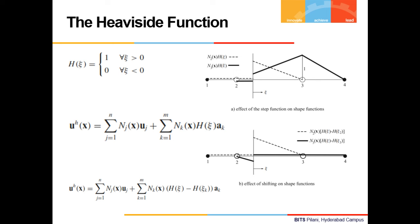Application of the jump function on a quadrilateral element may lead to a discontinuous field. The deformation field includes all potential displacement fields independently for both sides of the crack. The strain fields also remain independent for both sides of the crack compared with the previous case.